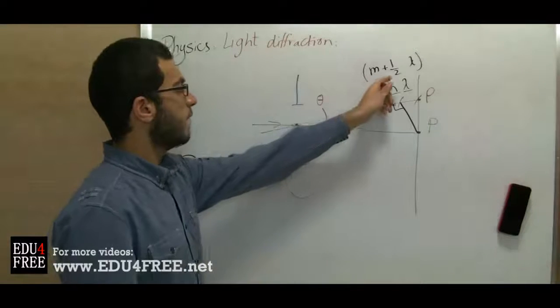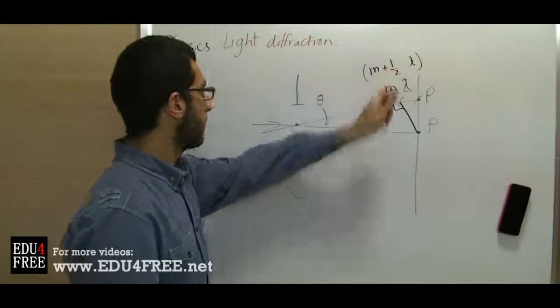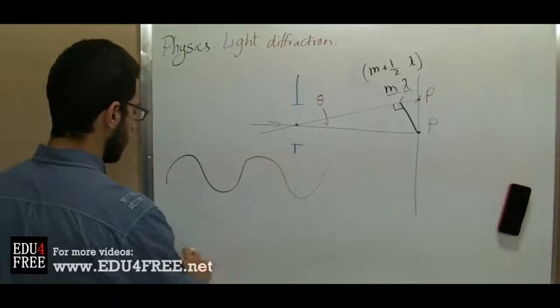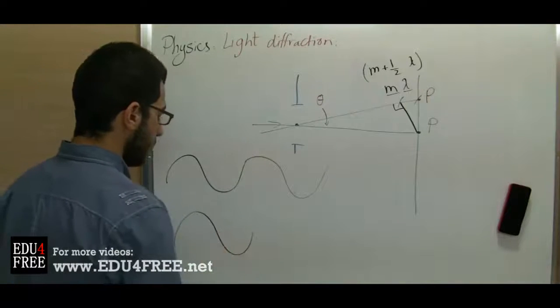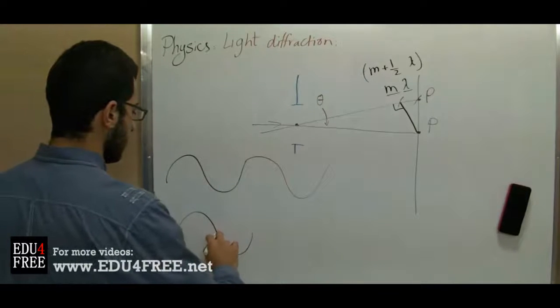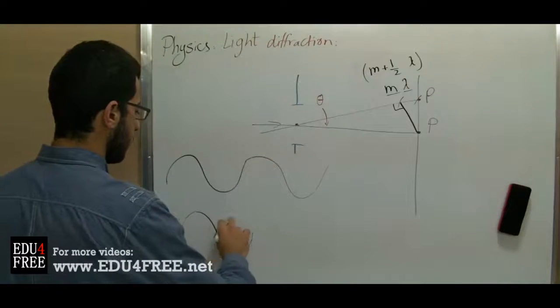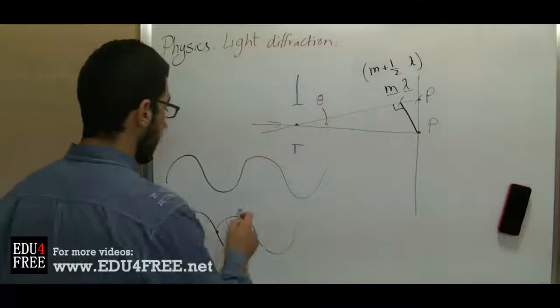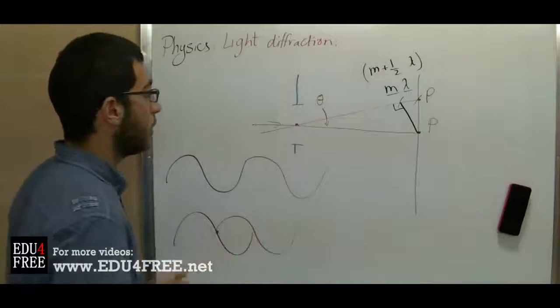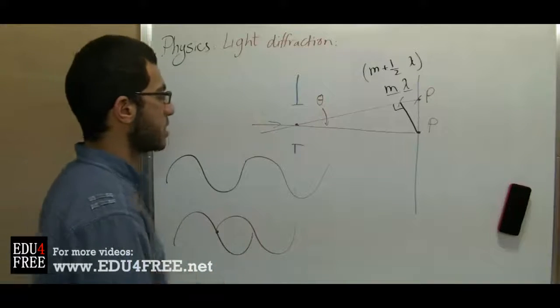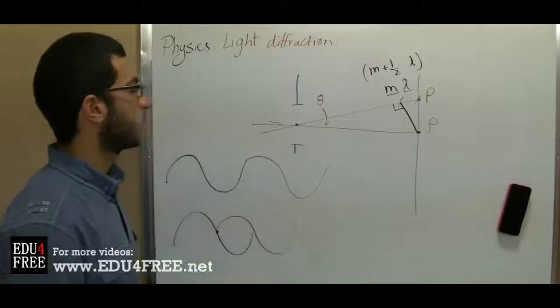But if we have a plus half here, so the wave, instead of going like that, we will get here at the half of the wave, we will get the other wave. So they will cancel each other and we will get a destructive interference leading to the presence of a dark spot or a dark ring.